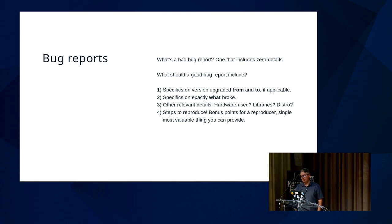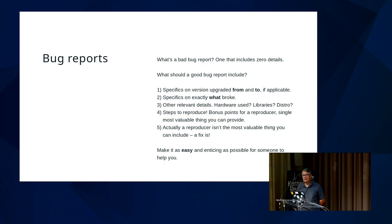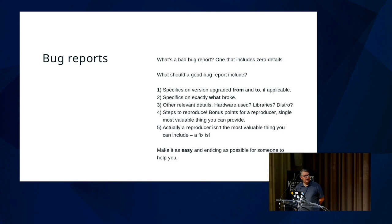In general you want information on what you're going from and what you're going to, and whether it's a regression. You want specifics on what broke, the environment, hardware used, and steps to reproduce. Best of all is a reproducer — someone who says 'we extracted everything from our production environment and here's exactly what's failing.' Once you have a reproducer that's 99% of the work. It's also super useful if people run git bisect and identify the specific commit — commits are usually small and it's trivial to figure it out from there, as long as you have high confidence the bisect is correct.